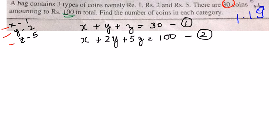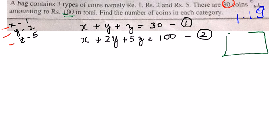So what we will do is make one of these variables a constant. We will make an assumption — let z be equal to k. This is the assumption we are making.